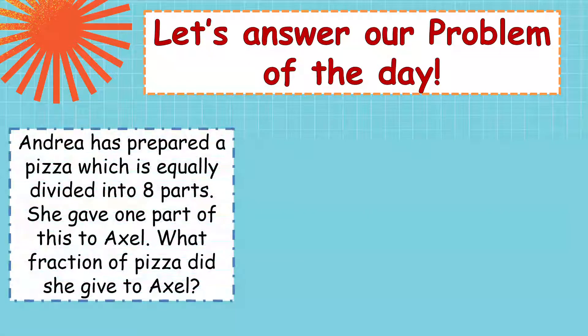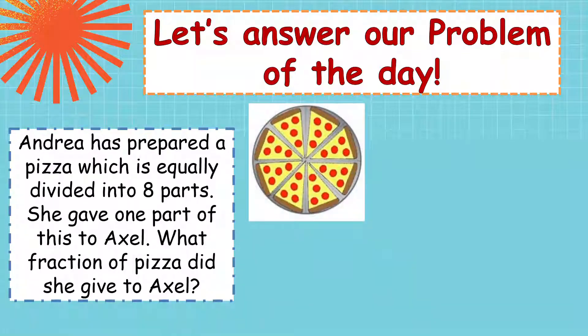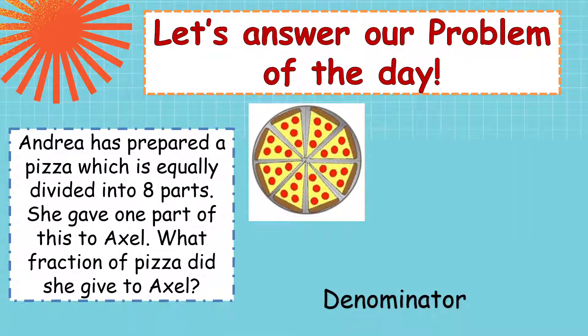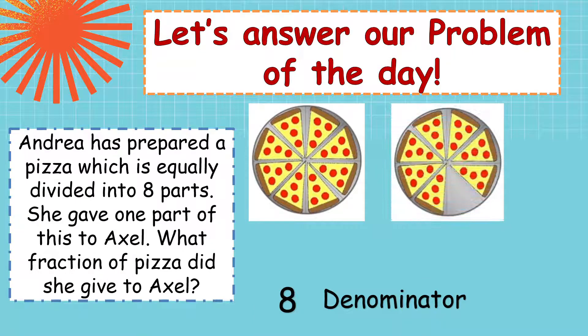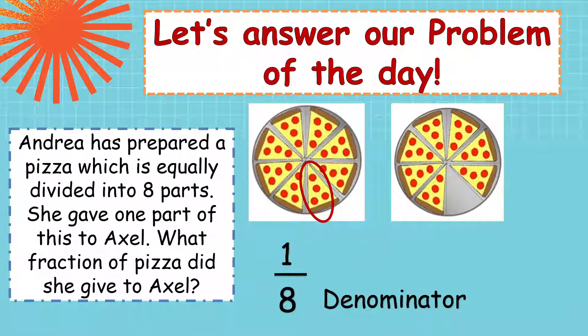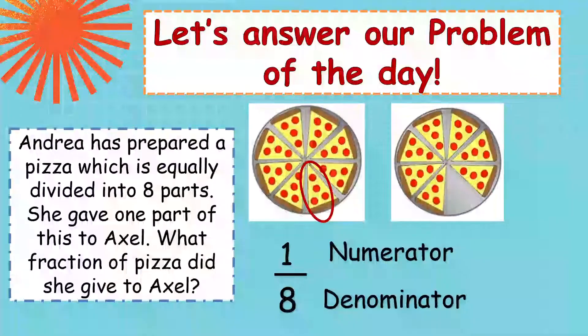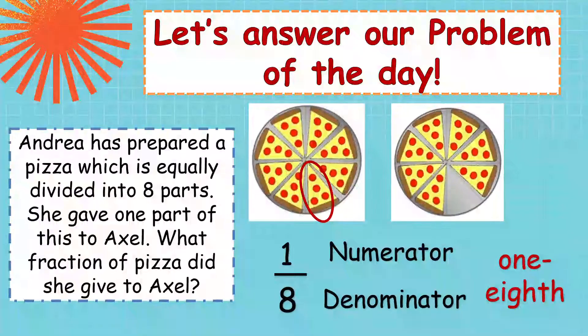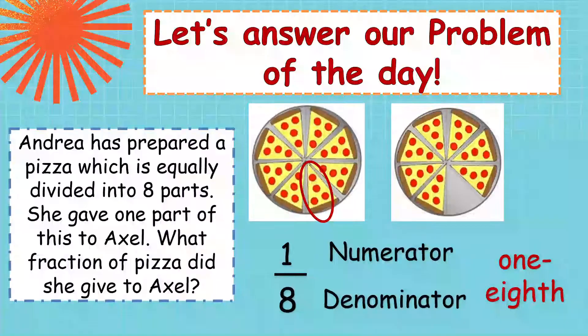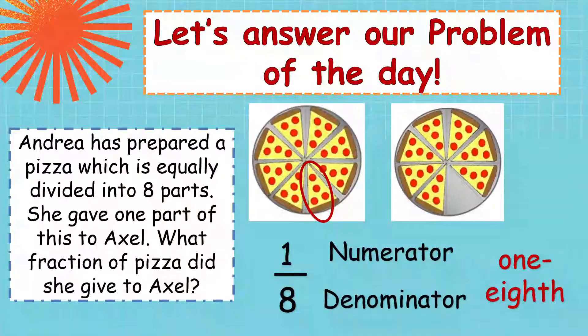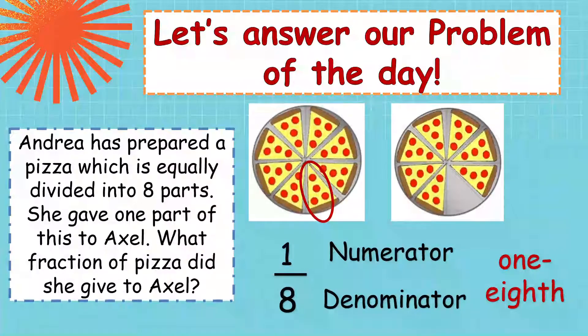Let's answer the problem of the day. So, how many pizza did Andrea buy? Yes, there is only one whole pizza. But, she divided it equally into 8 equal parts. And then, that 8 equal parts, that will be our denominator. That's the number that we're going to write at the bottom. And, look, one pizza is missing because that one pizza was given to Axel. So, we can say that the fraction of pizza that Andrea gave to Axel is 1 eighth. 1 pizza, 1 piece out of the 8 parts. So, it's 1 eighth. That's the answer.